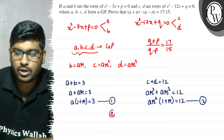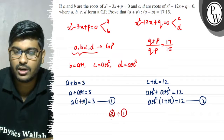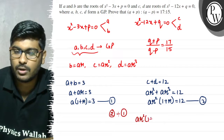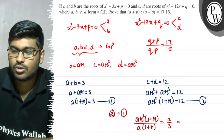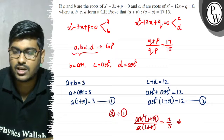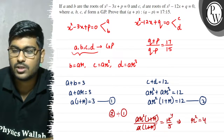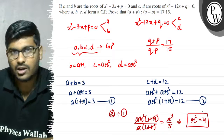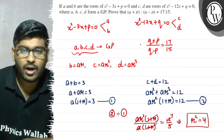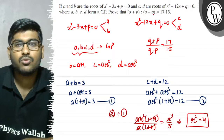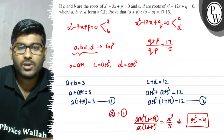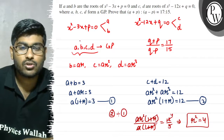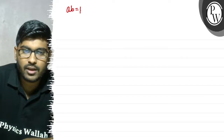Now we divide equation 2 by equation 1. So ar squared into 1 plus r upon a into 1 plus r equals 12 upon 3. The 1 plus r and a cancel, so r squared equals 4.